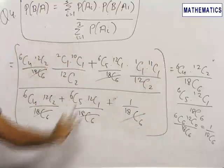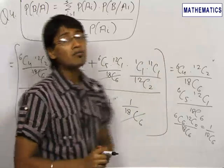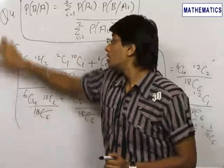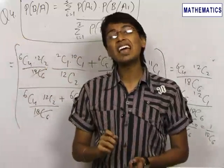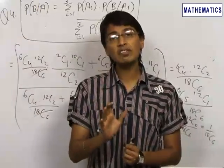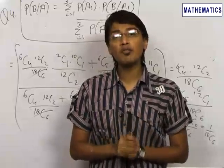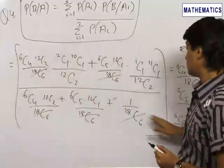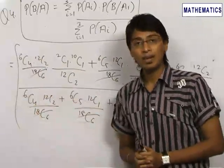We cannot simplify these terms further but can leave the answer in this format. In this problem we learned the important Bayes theorem, which applies when one condition or event has already occurred and we need to find the probability of a forthcoming event. Our final answer is obtained using this important Bayes theorem.